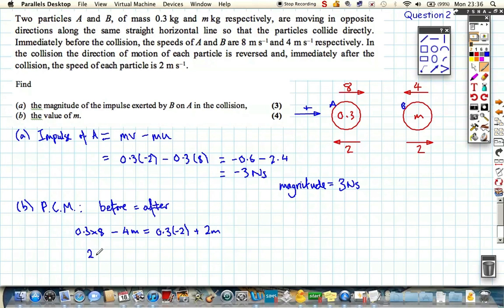So if we sort all this out, we've got 2.4 plus 0.6 is equal to 2M plus 4M, or quite obviously 3 is equal to 6M. So the mass is equal to 0.5 kilograms. And it's important that we put our units in both questions.